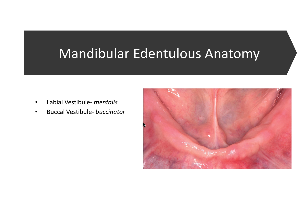Likewise for the buccal vestibule, the buccinator muscle attaches to the ridge. The buccal vestibule is everything posterior to the buccal frenum — the space between the ridge and the buccal mucosa and the cheeks. When we talk about denture flanges, the flange is the extension of the denture into the vestibule area. It's important where these muscles are attaching to the ridge because that defines how long our flange can extend into the vestibule.